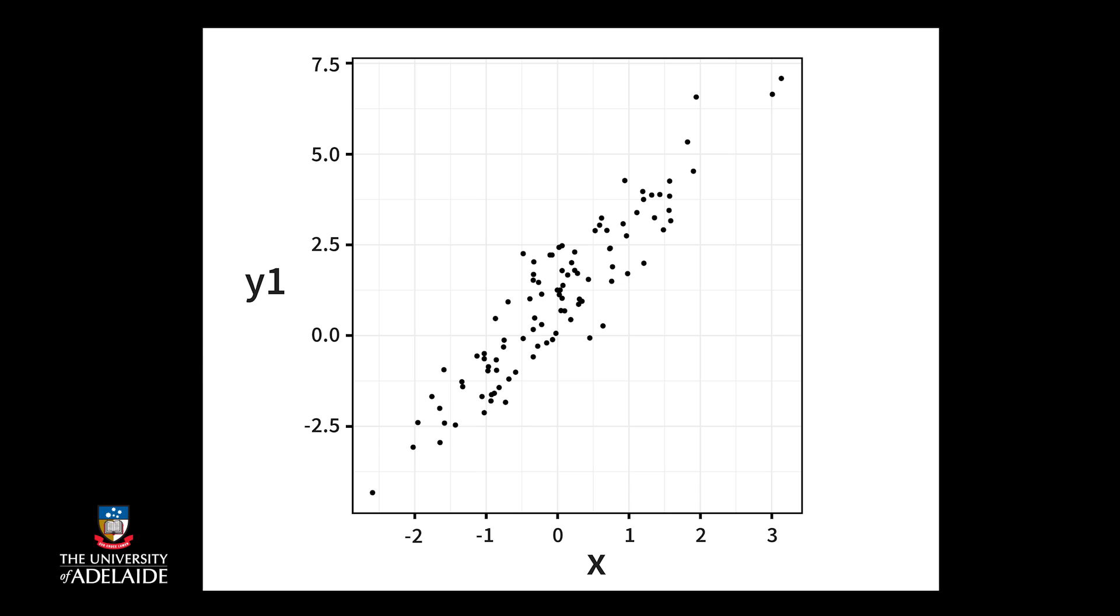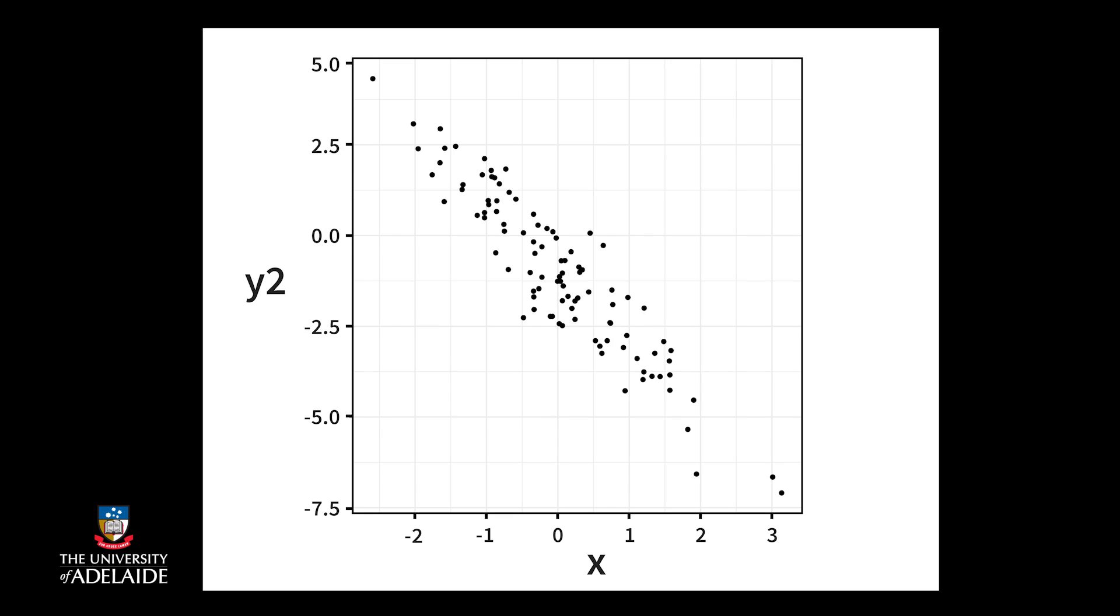First, direction. This describes how the variable on the vertical y-axis changes as the variable on the horizontal x-axis increases. This scatter plot has a positive direction, as when we go from left to right, the points generally increase. The next scatter plot has a negative direction, because the points decrease when we go from left to right.